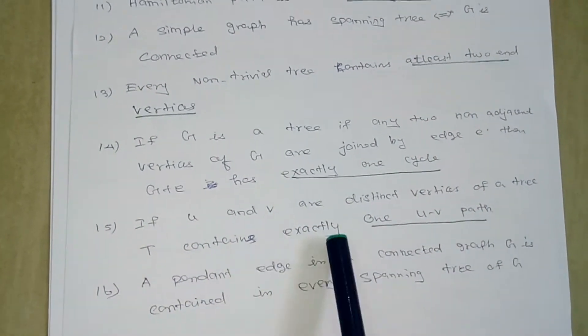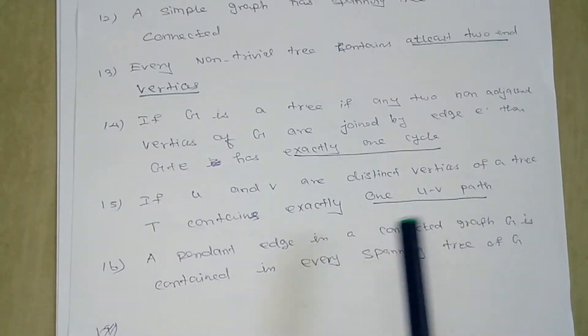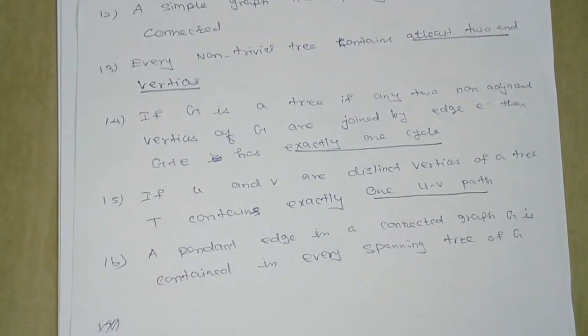T contains exactly one UV path. Next, a pendant edge in a connected graph G is contained in every spanning tree of G.